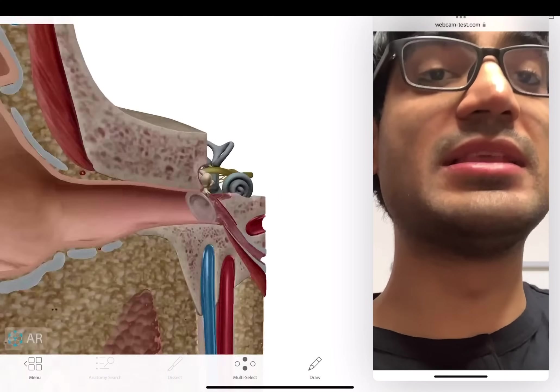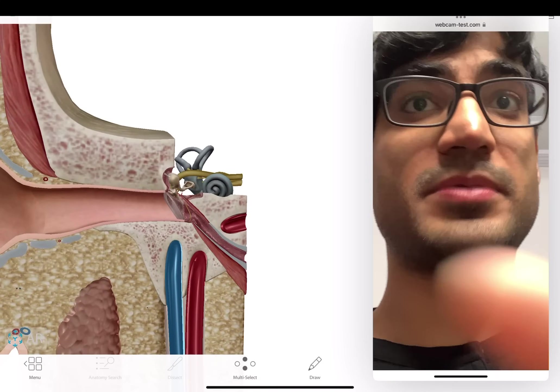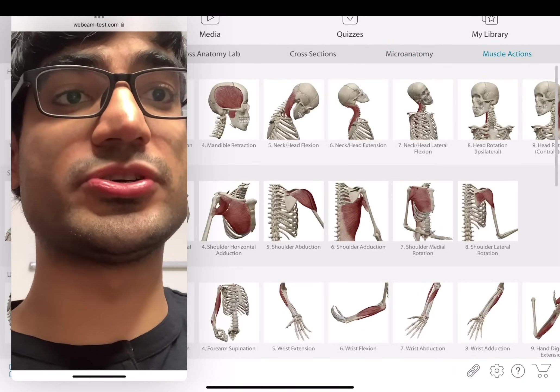So this is the ear. You can see the middle ear, inner ear, the cochlea, the vestibular nerve, how the facial nerve plays a part. So I think Human Anatomy Atlas is a game changer for anatomy. It also shows you muscle actions.